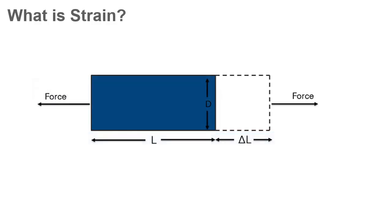What is strain? Strain is the amount of deformation a material experiences due to an applied force. Strain is defined as the ratio of the change in length of a material to the original unaffected length.